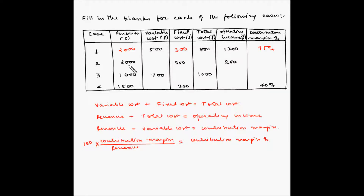Now let us take a look at the second case. We have the revenue of 2000 dollars. We don't have the total cost, so let's take it as x. Since revenue minus total cost equals operating income, 2000 minus x equals 200, so x equals 2000 minus 200, which is 1800.